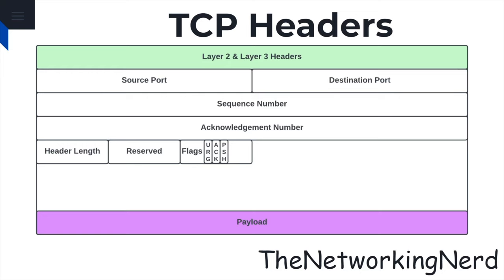The push flag is used to request the receiving application to process and deliver data immediately. It instructs the receiver to forward the data to the application layer for immediate processing rather than trying to optimize the transmission for efficiency through buffering.